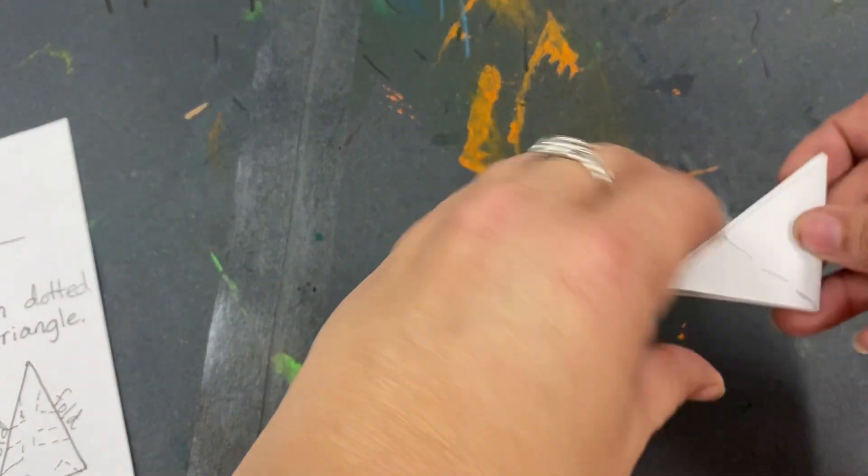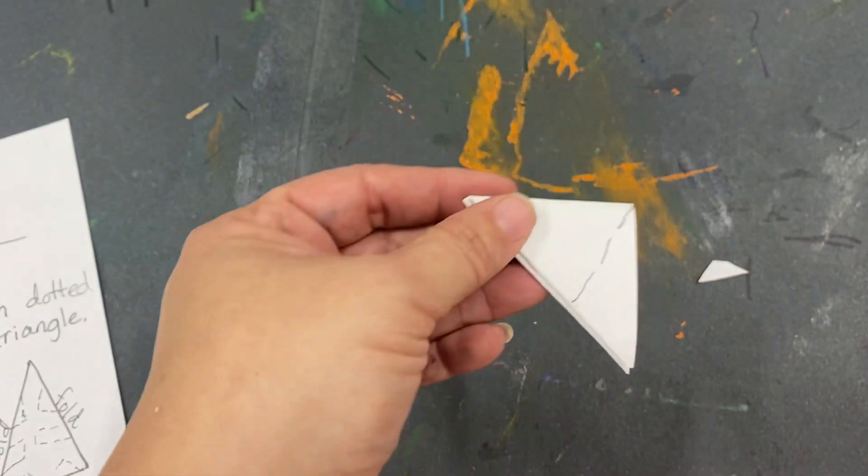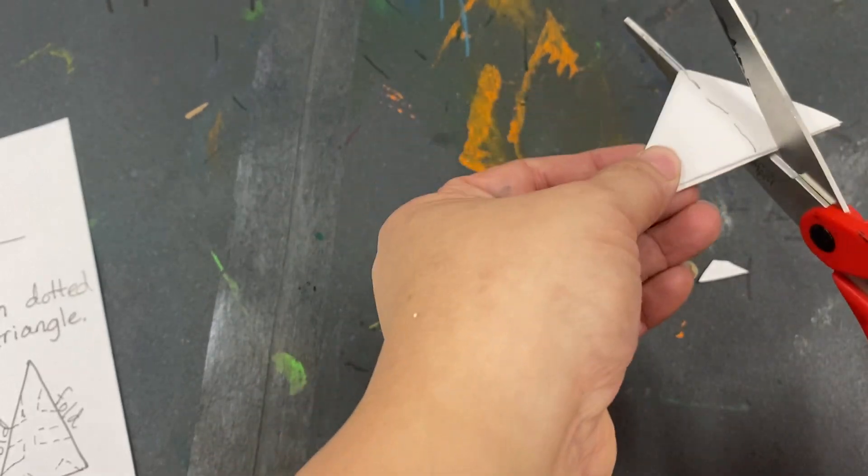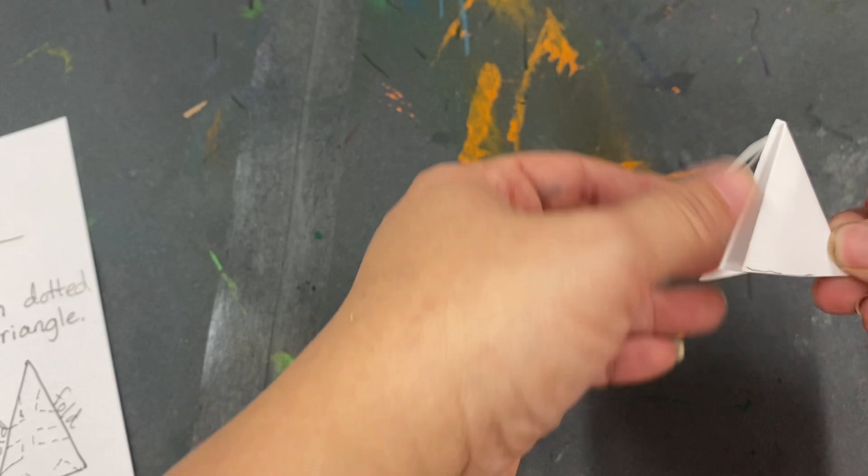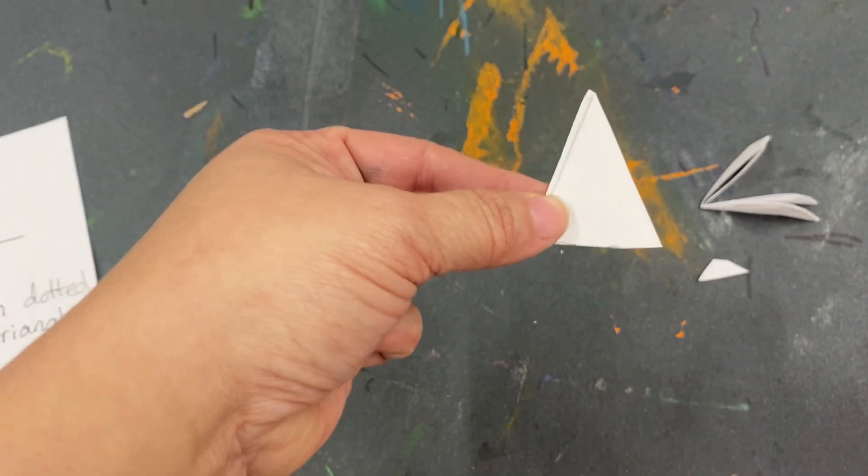Okay, so to continue our snowflake making, we're going to cut that corner straight across. Now we should have a triangle, something like this.